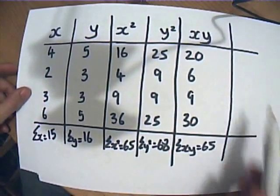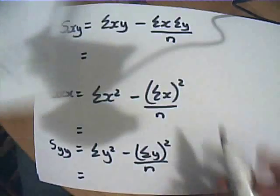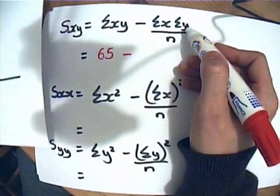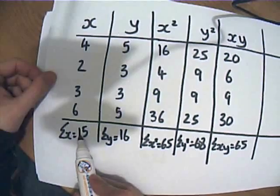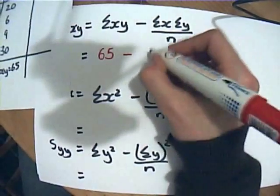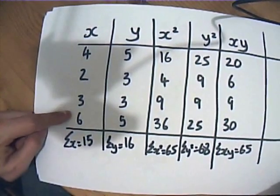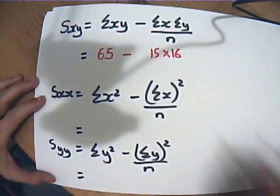Sum of x times sum of y, come back here. Sum of x was 15, sum of y was 16, and we mustn't forget how many results were there. Nice and easy, in this case there were 4 pairs of results.